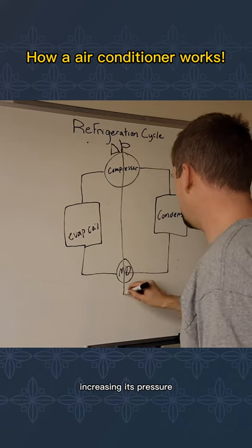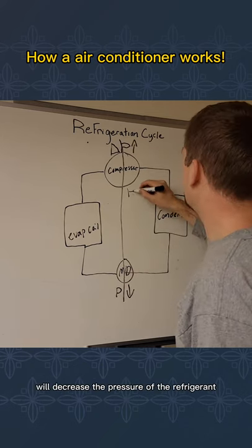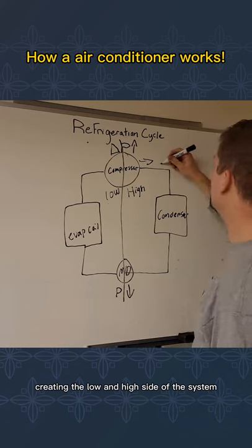The compressor will compress the refrigerant, increasing its pressure. The metering device will decrease the pressure of the refrigerant, creating the low and high side of the system.